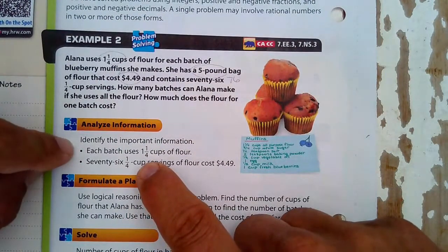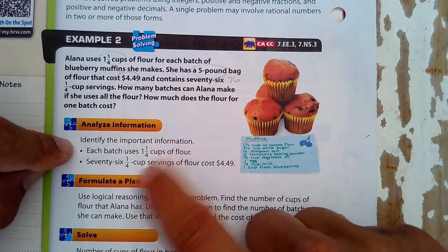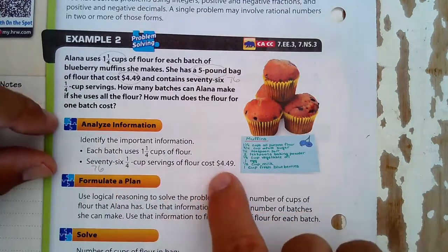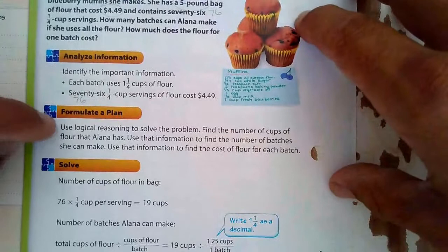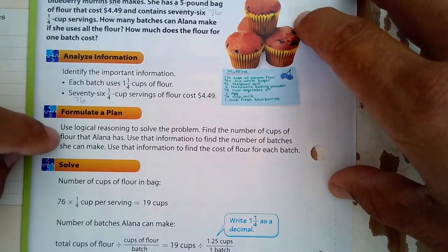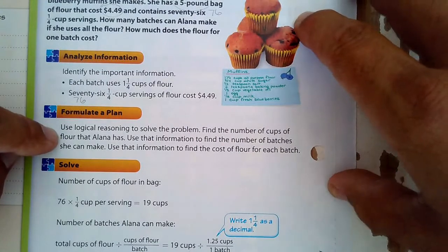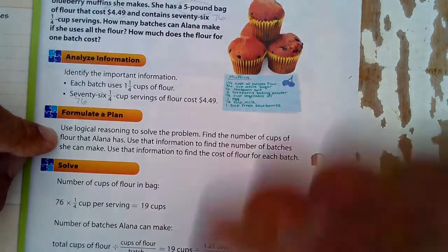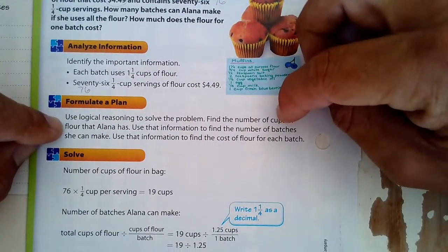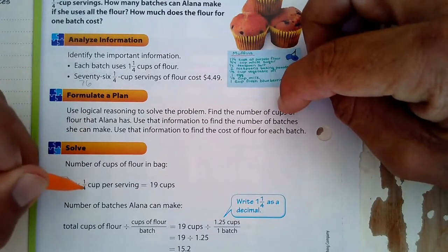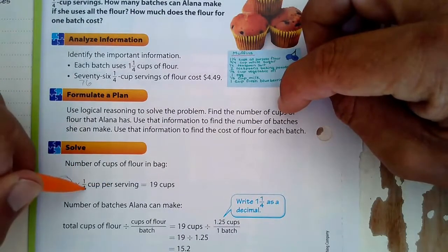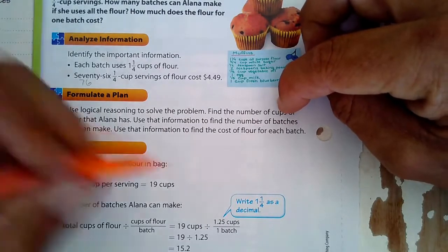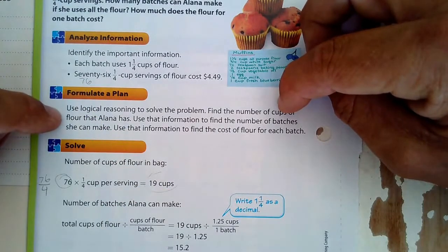So we're going to use our information here. Each batch uses 1 and 1/4 cups of flour. And 76 one-fourth cup servings cost $4.49. We're going to use logical reasoning. Find the number of cups of flour that Alana has, then use that information to find the number of batches she can make. First, the number of cups that she has. There's 76 one-fourth cup servings. So 76 times 1/4. That's the same thing as 76 divided by 4. And 76 divided by 4 is 19. So she has 19 cups.